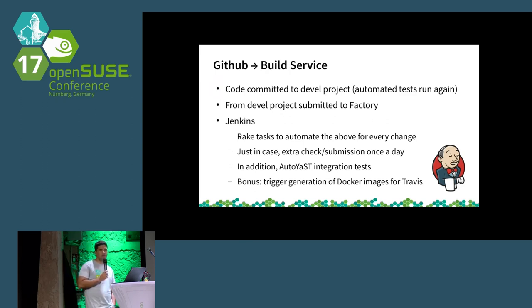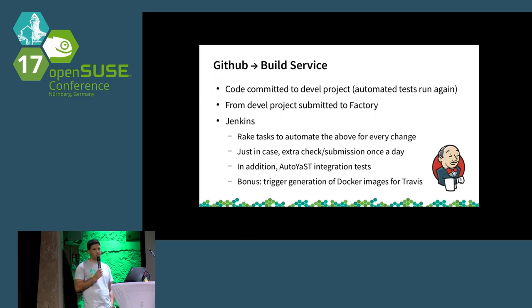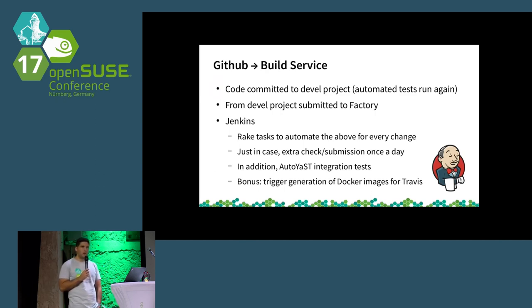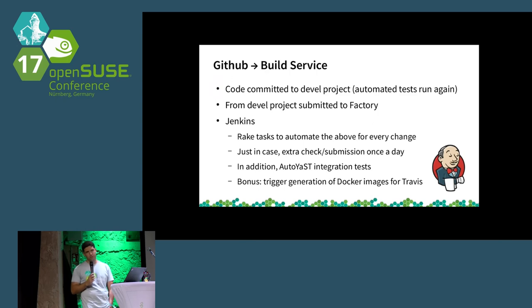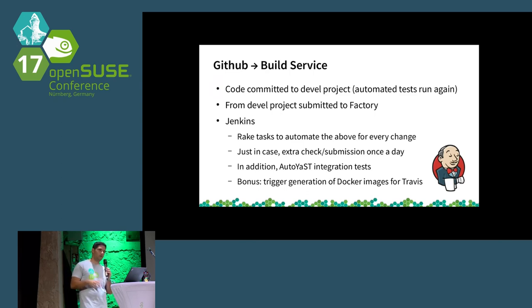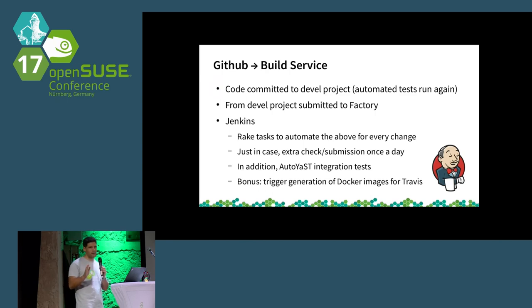Jenkins is always watching what happens in the repository, and if something new happens it commits to our developer project on OBS and from that developer project creates a submit request to Factory automatically. But things can always go wrong, so in addition we have another check: every day we make sure that everything in the repo is already committed to our developer project and submitted to Factory. In case OBS was down or Jenkins had a network problem when you introduced a change, we ensure that the build service and the repository are out of sync no more than 24 hours.